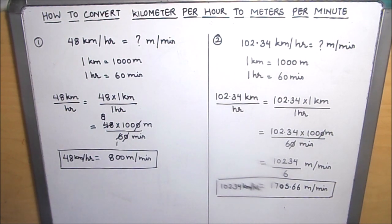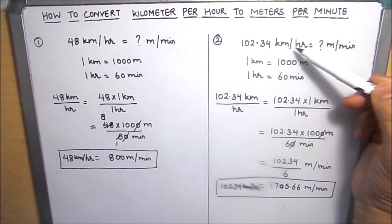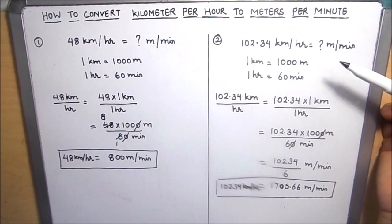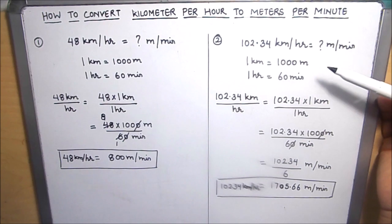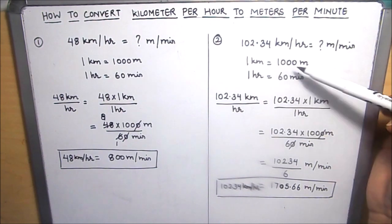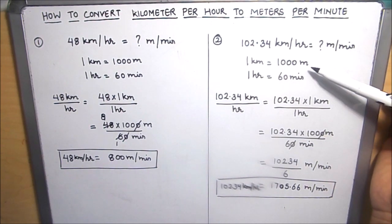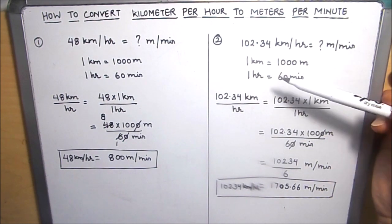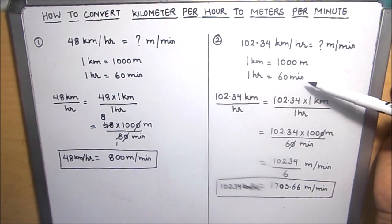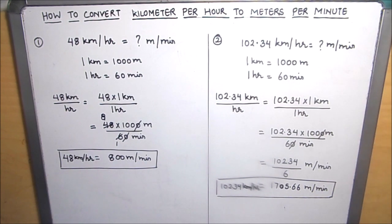This is how we can convert kilometer per hour to meters per minute. For this conversion, we just need to remember that 1 kilometer is equal to 1000 meters and 1 hour is equal to 60 minutes. I hope this is helpful to you. Thanks for watching.